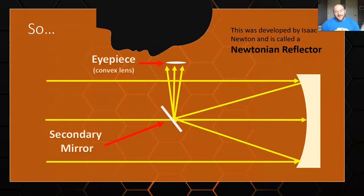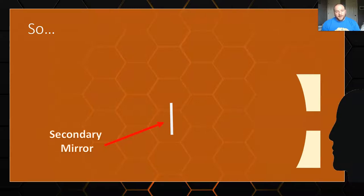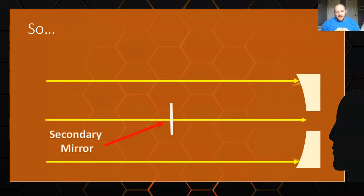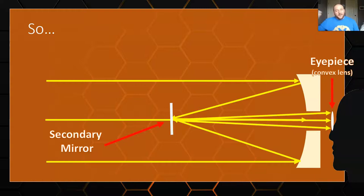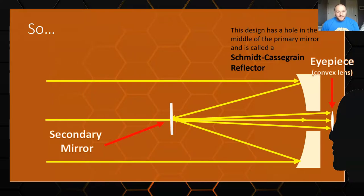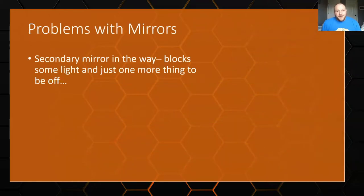The other basic design is the Schmidt-Cassegrain, which uses a flat secondary mirror aligned with the primary, and a hole in the center of the primary mirror. The light bounces off the primary, comes to the secondary mirror, and then shoots right back through the hole in the middle, where you can put your eyepiece. This looks from the outside more like a refractor. The secondary objective does block some of the incoming light, but it's not a world-ending problem — you just lose a little bit.